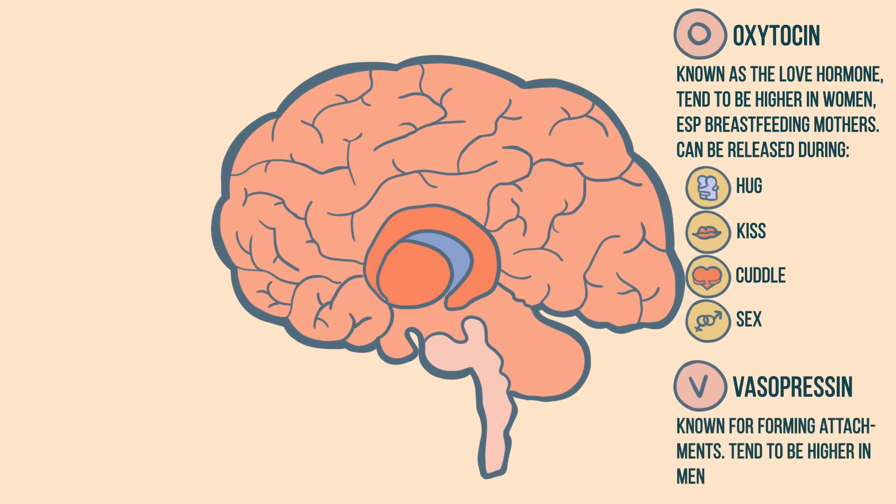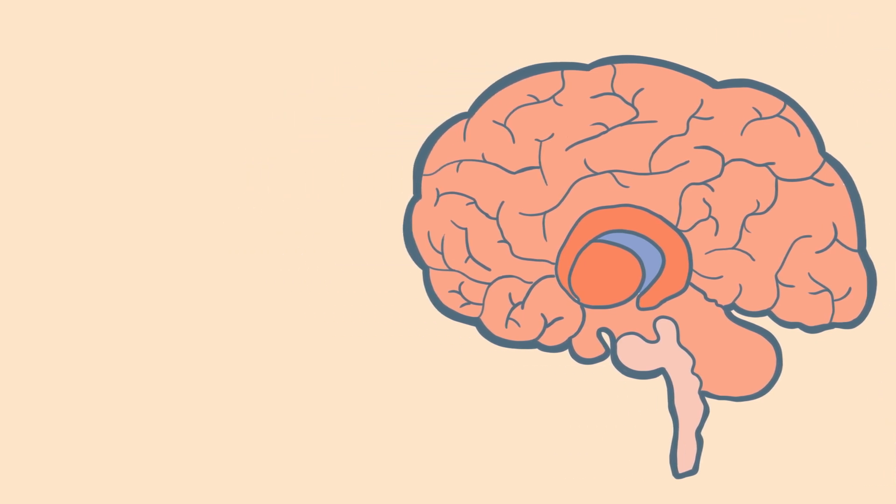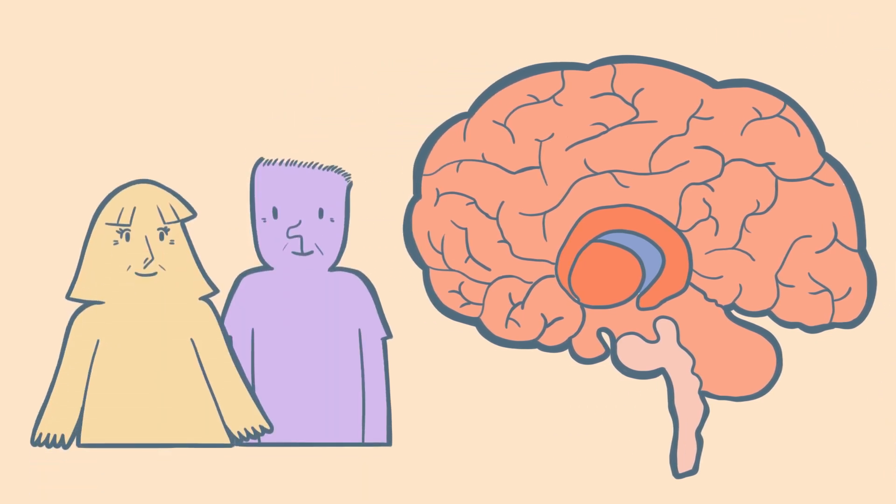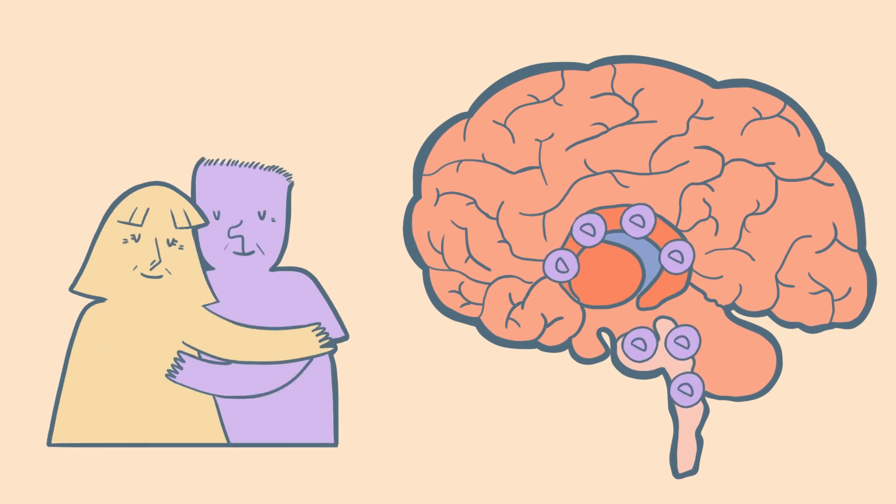Vasopressin is more abundant in men and is known to be integral for forming attachments. Another research carried out on couples that have been married for 20 years or longer still showed neural activity in dopamine-rich areas, similar to that early stage of love studies. In other words, it's still very possible to be madly in love after years of companionship.